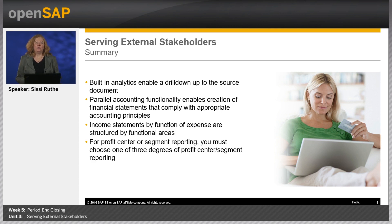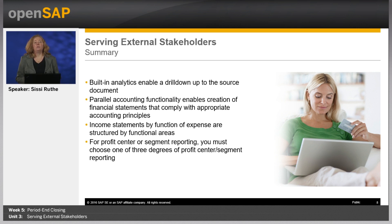So what are the key learnings of this unit? The built-in analytics in SAP Business by Design enable a drill-down up to the source document. Based on the parallel accounting functionality, you can create financial statements that comply with appropriate accounting principles. The system uses the function of expense method, meaning that expenses for sales documents are treated as cost of goods sold. Together with the structure of an income statement by functional areas, this supports creating income statements by function of expense, which is often required by accounting principles. Profit center and segment reporting is supported — you must choose one of three degrees. In our last unit, we will see how the system supports you to serve your internal stakeholders. Thanks for your attention and hope to see you again.